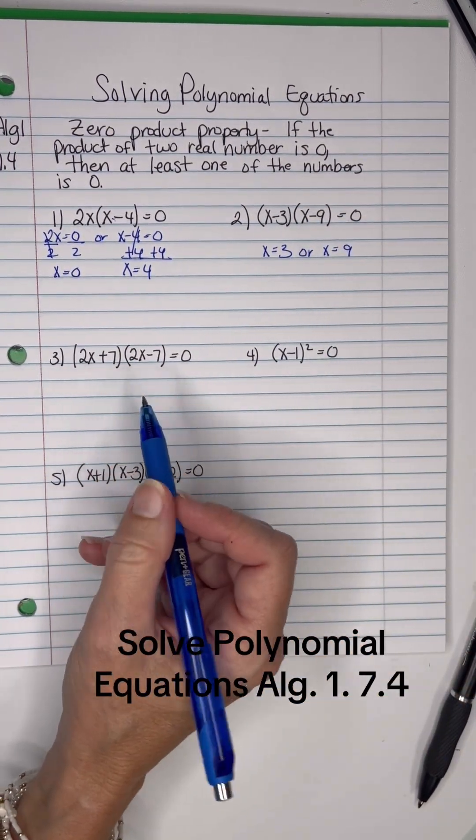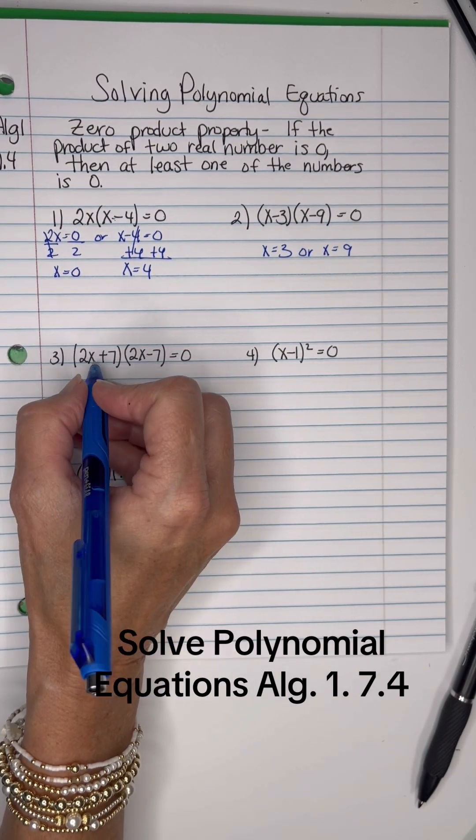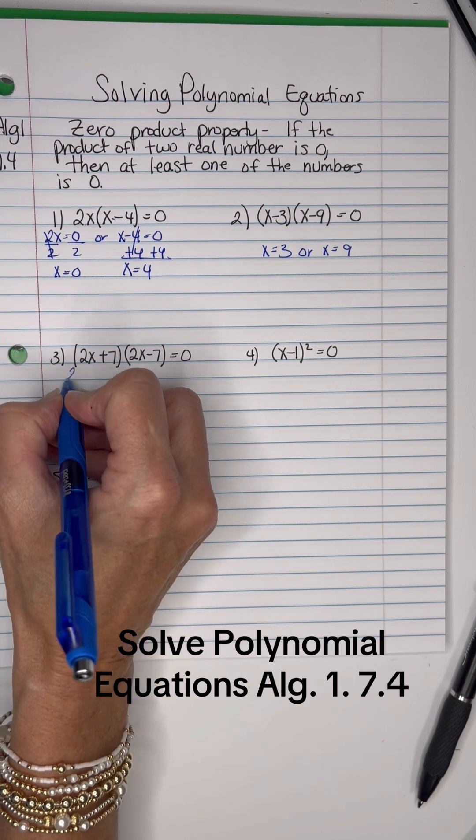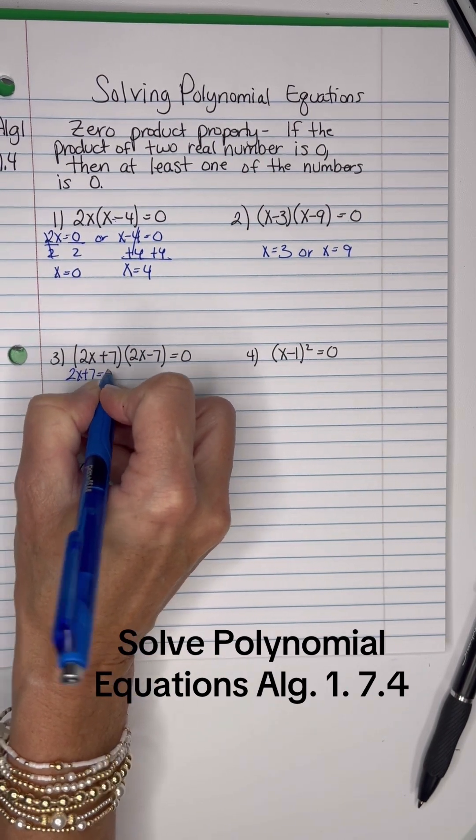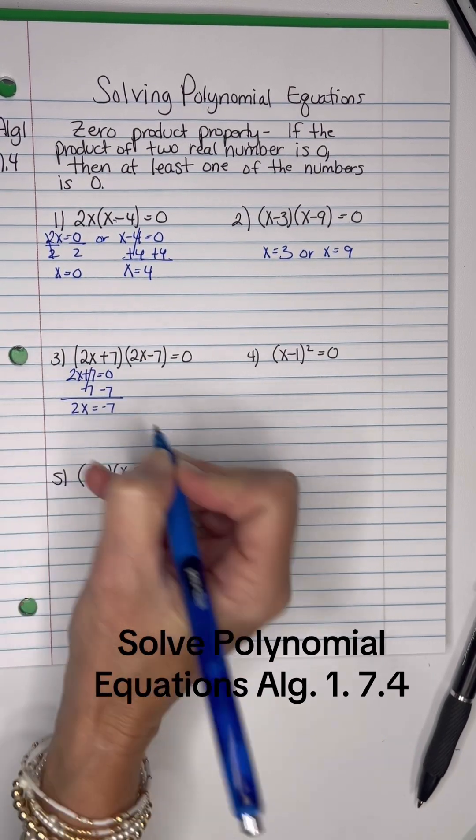On this one right here, I have a little bit more to do, but I will show you a shortcut for it as well. Now, we have a 2X plus 7 and a 2X minus 7. So if 2X plus 7 equals zero, and I subtract 7 from both sides, I will get 2X equals negative 7.